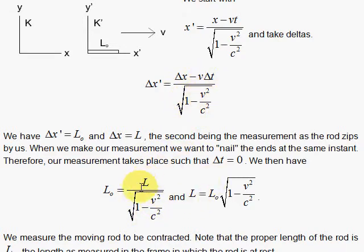So this means that we measure in the laboratory frame, watching the L naught zip by, we measure a contraction. That's called the Lorentz contraction.